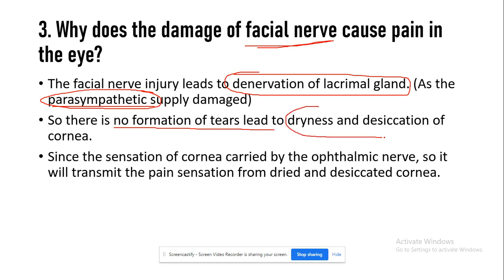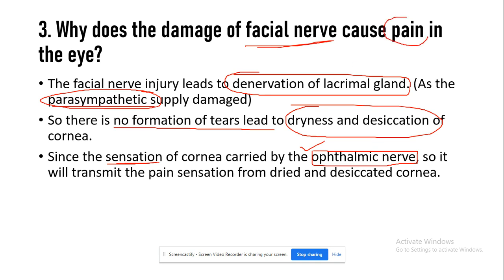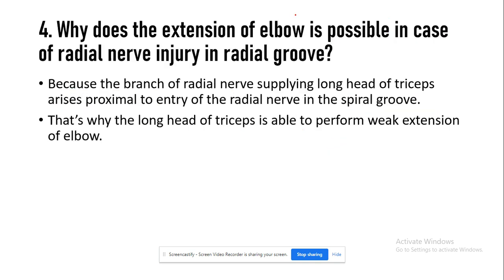The lack of tear production leads to dryness and desiccation of the cornea. Since sensations from the cornea are carried by the ophthalmic nerve, which is intact, the dryness causes pain. These pain sensations, carried by the ophthalmic nerve, are the reason that facial nerve injury results in eye pain.